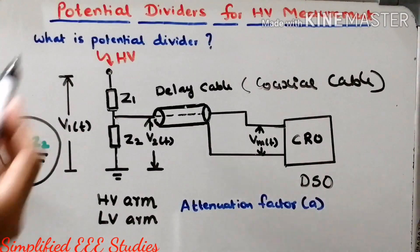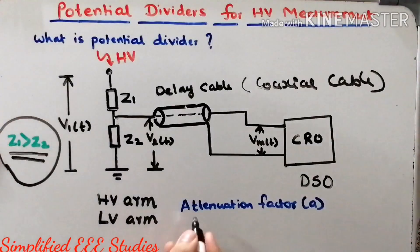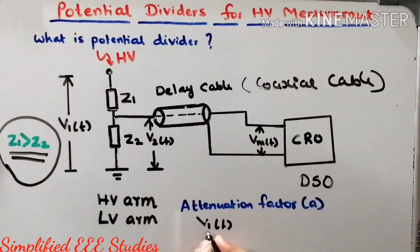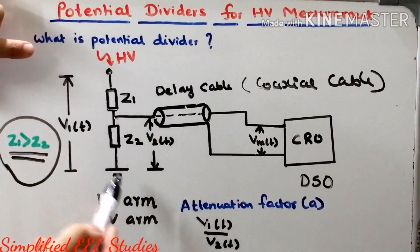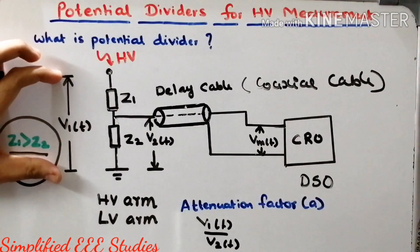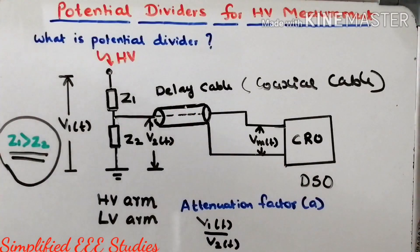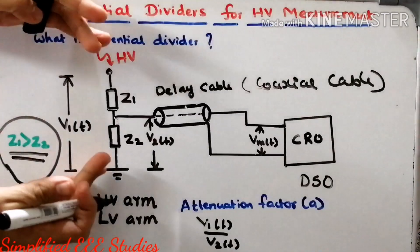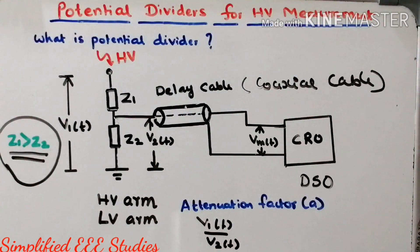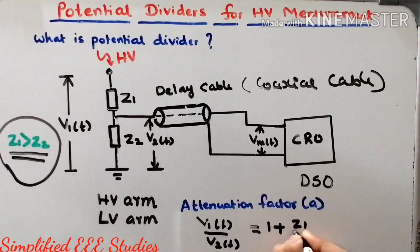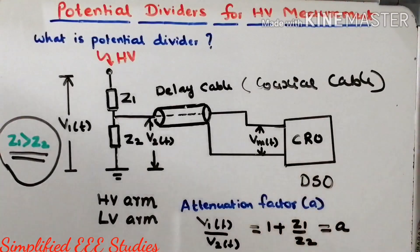While doing high voltage measurement using a potential divider, you need to consider one more term known as the attenuation factor. The attenuation factor is the ratio of V1 to V2, where V1 is the total voltage across the arm and V2 is the voltage across the low voltage arm. If you simplify this ratio, you get 1 plus Z1 divided by Z2. This quantity, 1 plus Z1 by Z2, is known as the attenuation factor, usually denoted by the letter A.